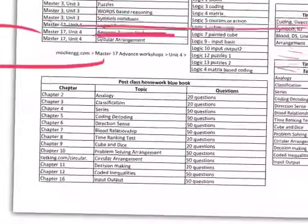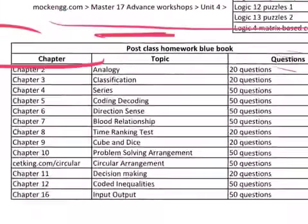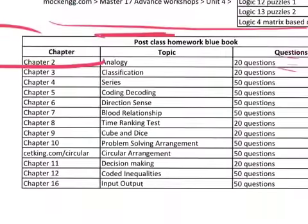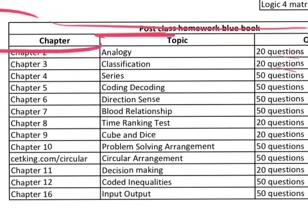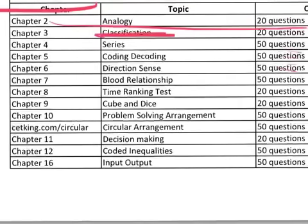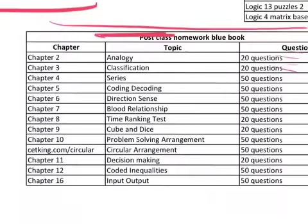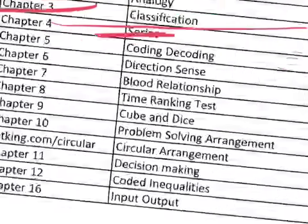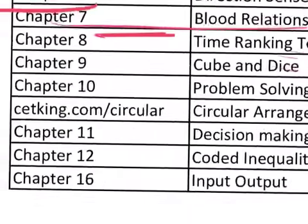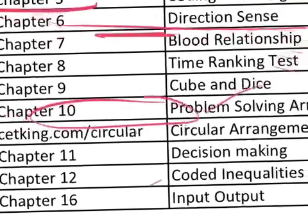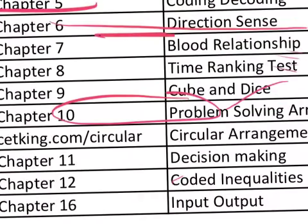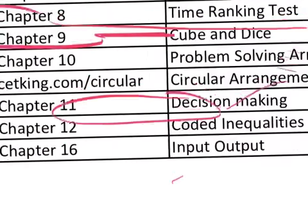Post-class homework: pick up every chapter from the CET King book, or whichever book you are already using, and do only these chapters, because these are the most important topics. For circular arrangement, for example, we don't have too much content in the book, so you have to follow ceting.com/circular, which will cover most of that part.